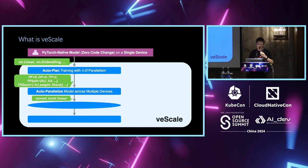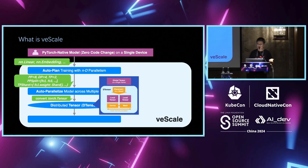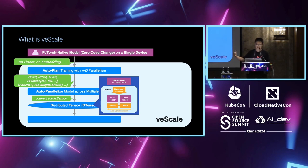At the very core of V-Scale is D-Tensor. The parallelized API converts normal PyTorch tensors into D-Tensors. A D-Tensor is like a normal tensor that is distributed — stored across devices. Algorithmically it is equivalent to a normal tensor, but it also contains meta-information: placement information indicating whether it is replicated or sharded, and device mesh information indicating which device ranks in the cluster store the tensor.